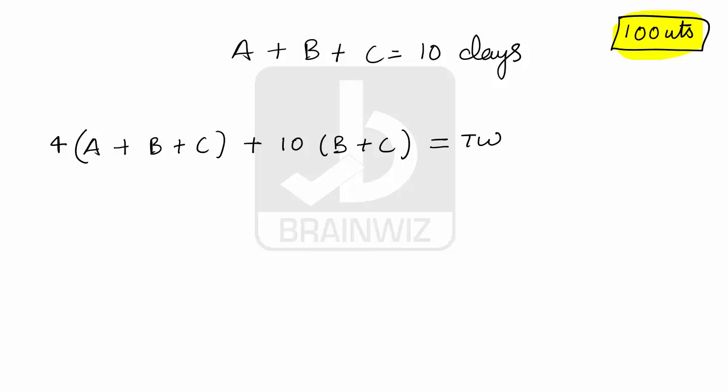This 100 units can be done by A, B, C in 10 days, so we can understand that they can do per day 10 units. So we can just try to find out this 100 units in 10 days, per day you can just make 10 units. Now using this simple assumption concept you can do it.